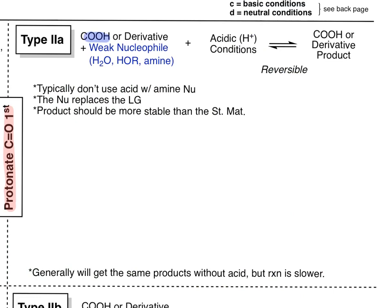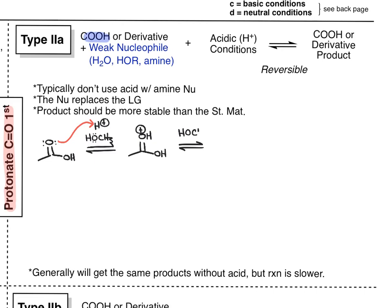Here we are in our Type 2a category. We're looking at a carboxylic acid — I'm just going to keep it very simple and use acetic acid — and we're going to react that with acid and then alcohol, methanol. The first step is always to protonate your oxygen, and you get an activated carbonyl. Now that we have an activated, extra-reactive carbonyl, the methanol, being a weak nucleophile, can add to that. Activated carbonyl — add your nucleophile to the carbonyl carbon.